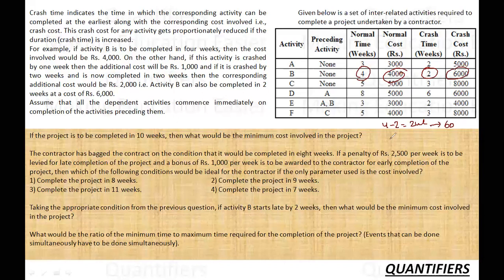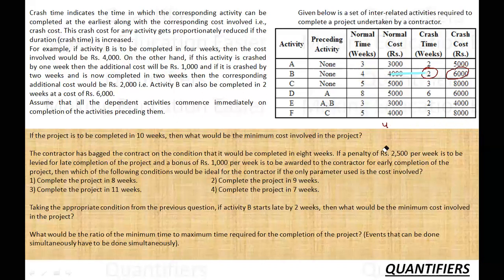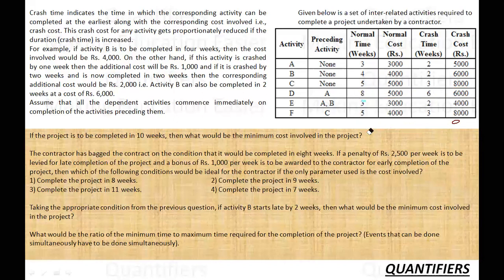The transition cost for B is 1,000 per week — so 1 week extra costs 1,000, 2 weeks extra costs 2,000. For D, which normally takes 8 weeks and in crash time takes 6 weeks, the difference is 2 weeks and the crash cost increases from 5,000 to 6,000 — that's 1,000 rupees over 2 weeks. So D has a transition cost of 500 per week.